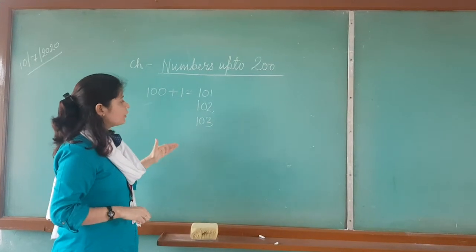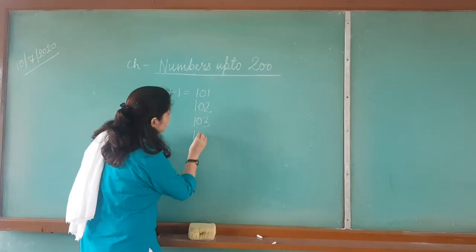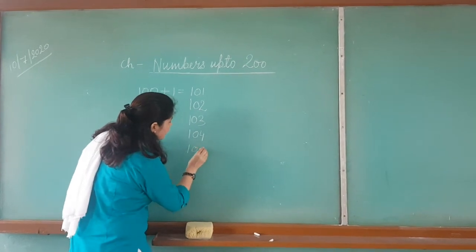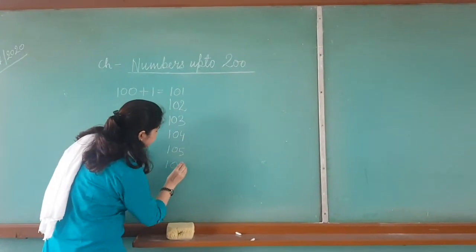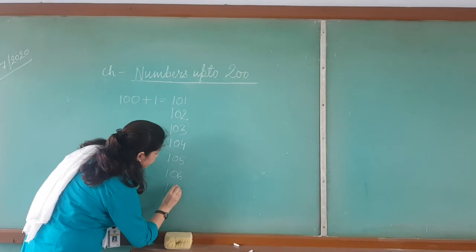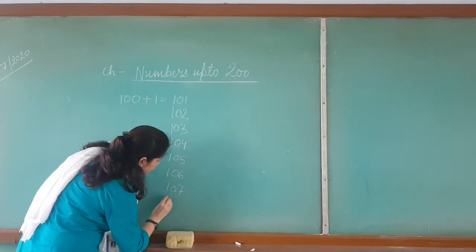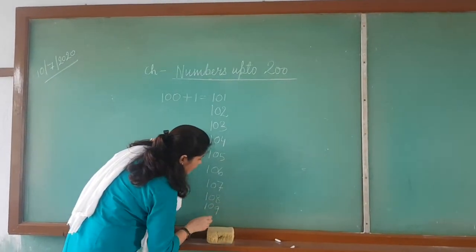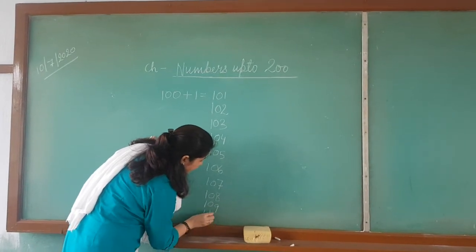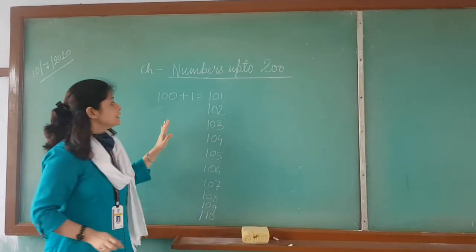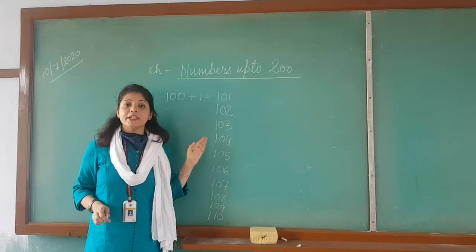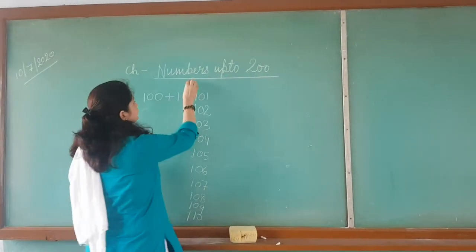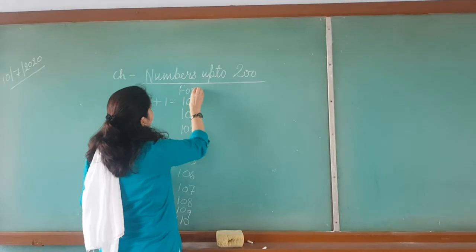In the same way, you have to write till 110. How do you write? 102, 105, 106, 107, 108, 109, and then 110. This is the way to write a number in the forward counting manner. These are the forward counting numbers.